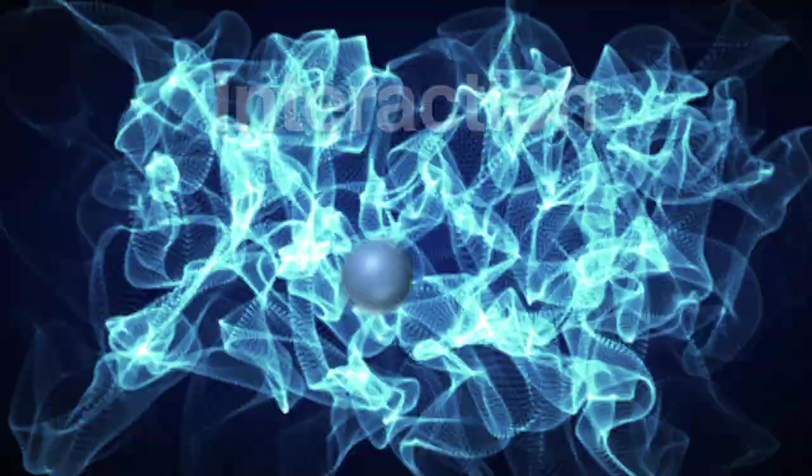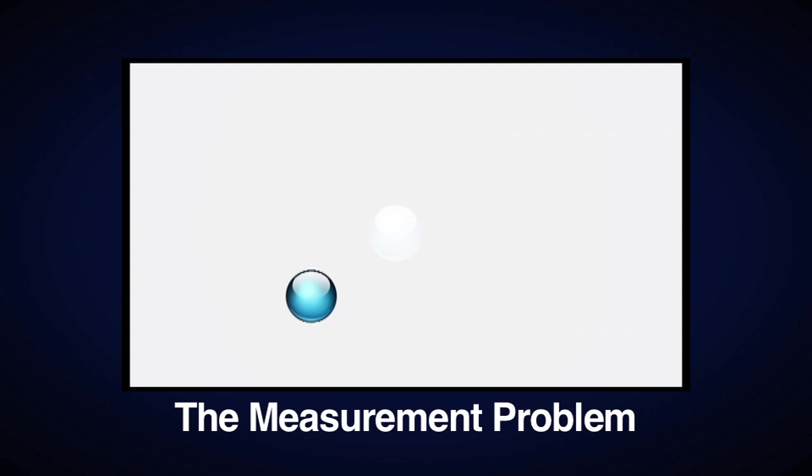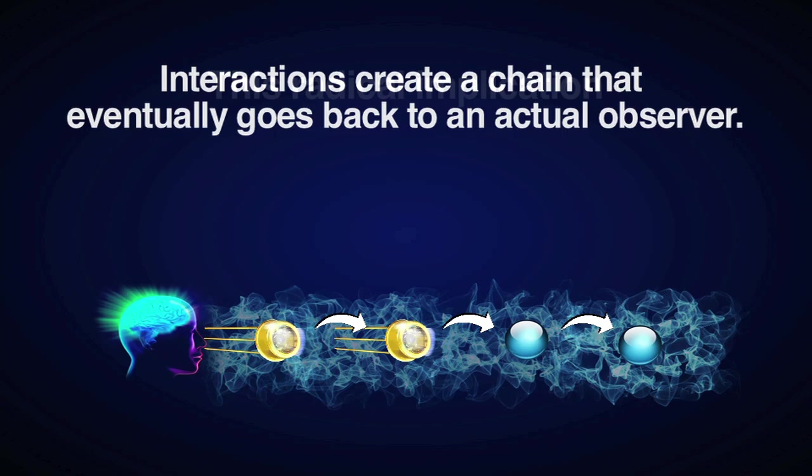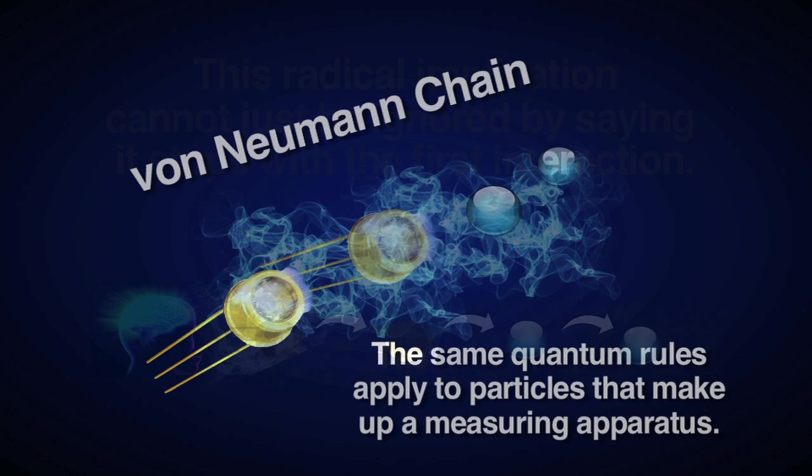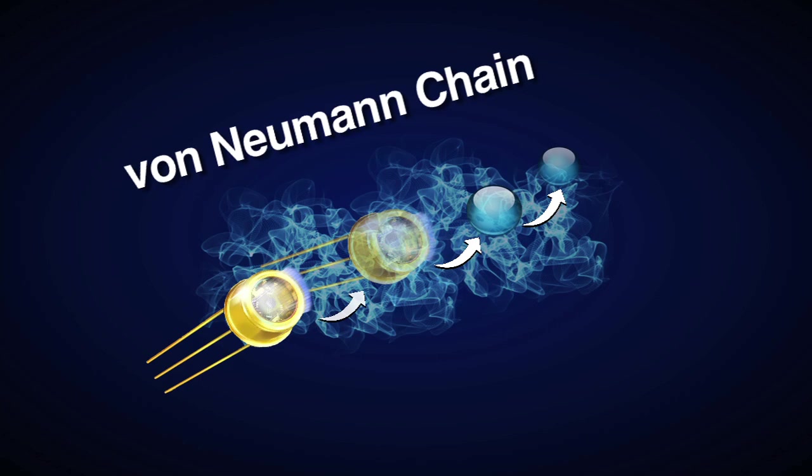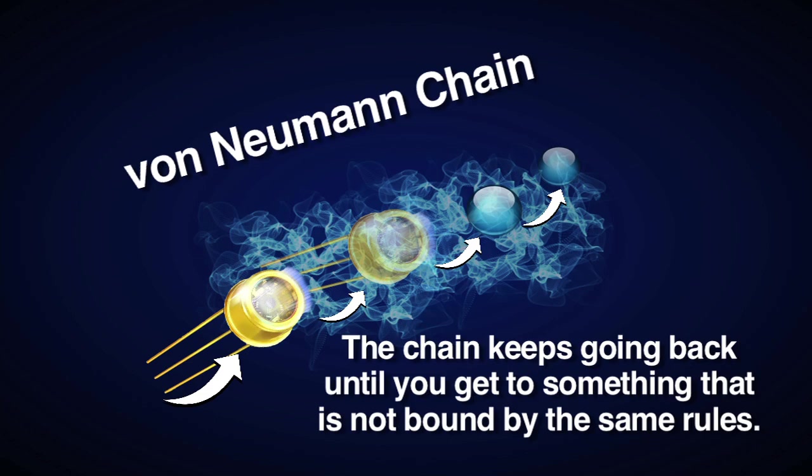Some also try to suggest that interaction and decoherence can adequately explain the collapse of the wave function, but we addressed this in our video The Measurement Problem and demonstrate this is not true, as interactions create a chain that eventually goes back to an actual observer. This radical implication cannot just be ignored by saying it stops with the first interaction, the same quantum rules apply to the particles that make up the measuring apparatus, so you need something else to collapse the particles for that apparatus, and so on and so on. The chain keeps going back until you get to something that is not bound by the same rules, and as physicist John von Neumann identified it, the only logical place to stop this chain is with the one who is ultimately performing the measurement, the conscious observer.